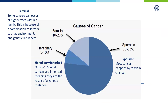Most cancer is not genetic, but rather something that occurs sporadically or by random chance, and we find that 70 to 85% of all cancers are sporadic. 10 to 20% of cancer is what we call familial cancer, which is when a cluster can be seen within one family. This might be occurring due to shared environments, lifestyle, genetic influences, or other factors within one family.